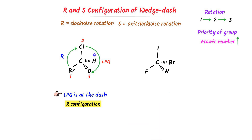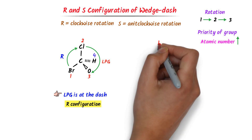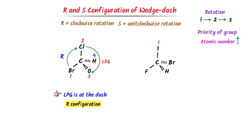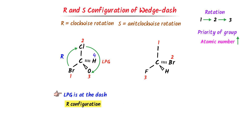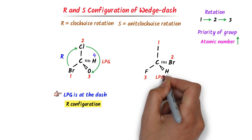Consider this organic compound. We can see that this is a chiral carbon because four different groups are present around it. We know that priority is given to the group having the larger atomic number. Iodine has the largest atomic number, so first priority is given to iodine. Second priority is given to bromine. Third priority is given to fluorine, and hydrogen is LPG.